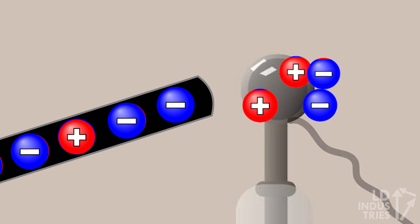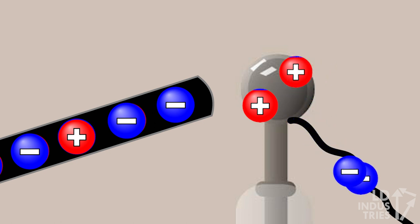If we ground that side of the electroscope by touching it with a wire attached to the earth, or even with our finger, we can allow those electrons to move even further away from the rod and leave the electroscope completely. This leaves the electroscope with a positive charge,